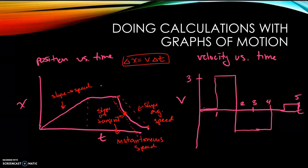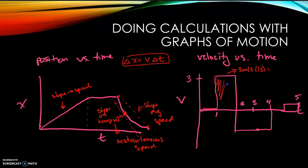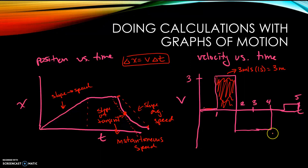On a velocity versus time graph, you can read position directly. For example, if the object is moving at three meters per second for one second, it has moved three meters. You can do this for each section — take the velocity times the time it travels at that velocity to get the change in position. Add up the change in position for each part and you get the net displacement.